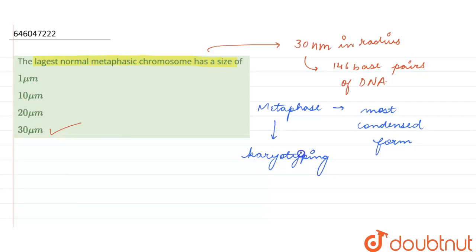It was found out that the largest size of the metaphase chromosome was to be around 30 nanometer or 30 micrometer. So our correct answer here will be option 4.